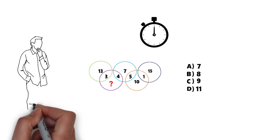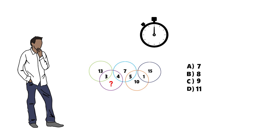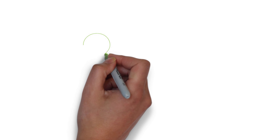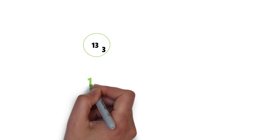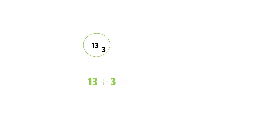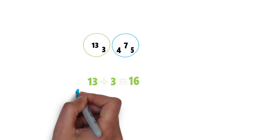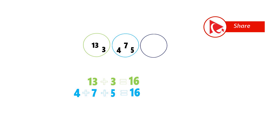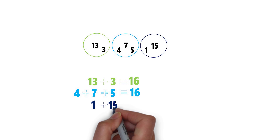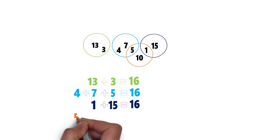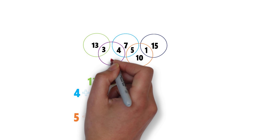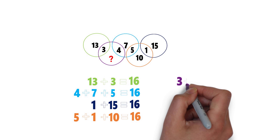Let's continue to see how we can get to the correct solution together. As you might have figured out, the sum of each number in a circle adds up to 16. For example, in the green circle: 13 plus 3 equals 16. In the blue circle: 4 plus 7 plus 5 equals 16. In the black circle: 1 plus 15 equals 16. In the orange circle: 5 plus 1 plus 10 equals 16.